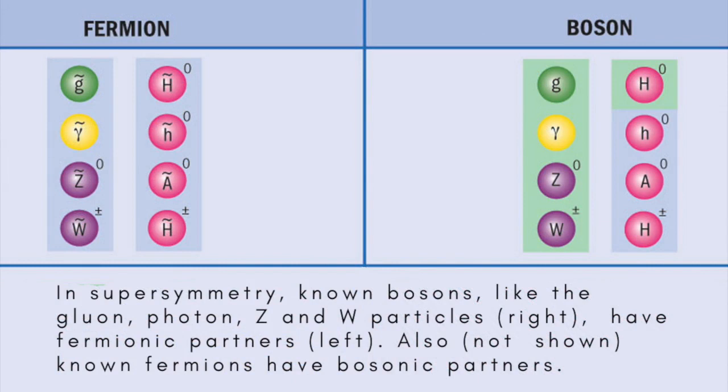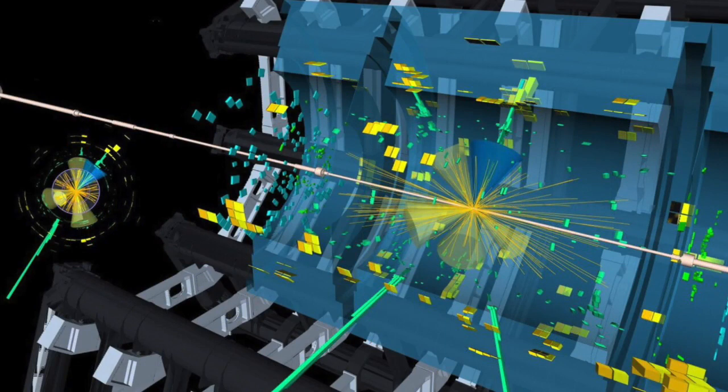In order to include fermions in string theory, there must be a special kind of symmetry called supersymmetry, which means that for every boson, a particle that transmits a force, there's a corresponding fermion. So supersymmetry relates the particles that transmit forces to the particles that make up matter.